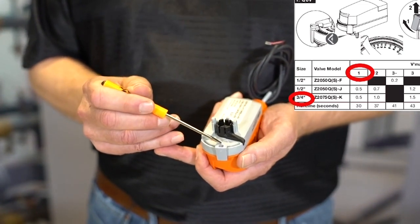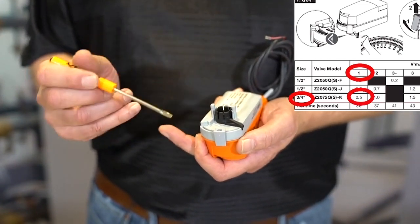You would look at this table, and in this instance here, we need a CV of 0.5. I want to point something out here before I go any further.